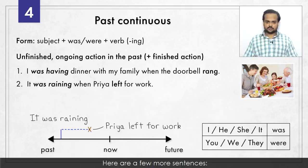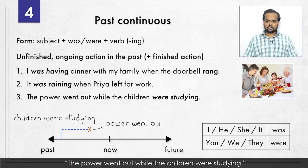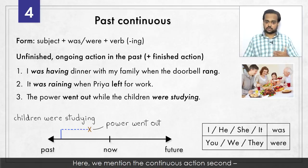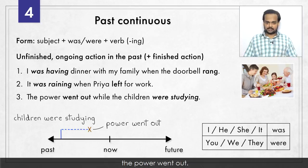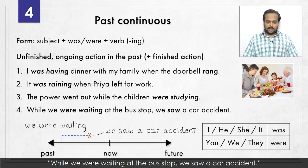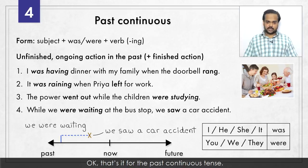Here are a few more sentences: It was raining when Priya left for work, so she had to take an umbrella with her. The power went out while the children were studying – here we mention the continuous action second and the single finished action first. While we were waiting at the bus stop, we saw a car accident. Thankfully, nobody got hurt. OK, that's it for the past continuous tense.